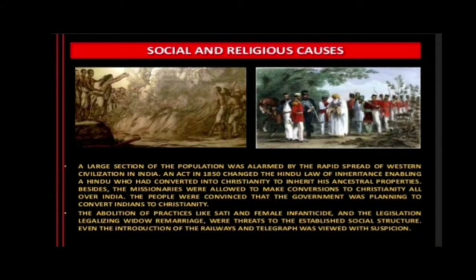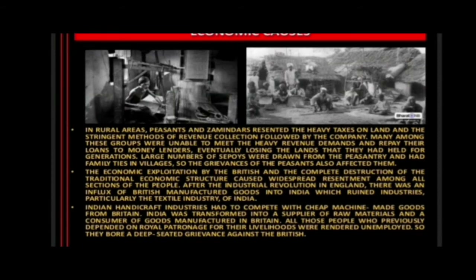Social and religious causes: A large section of the population was alarmed by the rapid spread of Western civilization in India. An act in 1850 changed the Hindu law of inheritance, enabling a Hindu who had converted to Christianity to inherit his ancestral properties. Missionaries were allowed to make conversions to Christianity all over India. The people were convinced that the government was planning to convert Indians to Christianity. The abolition of practices like sati and female infanticide, and legislation legalizing widow remarriage, were seen as threats to the established social structure. Even the introduction of railways and telegraph was viewed with suspicion.